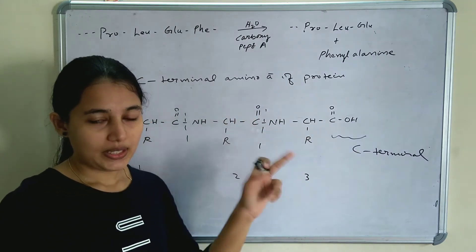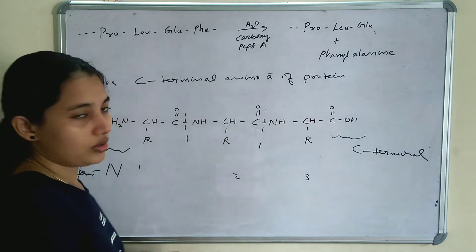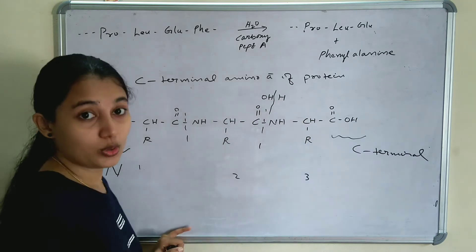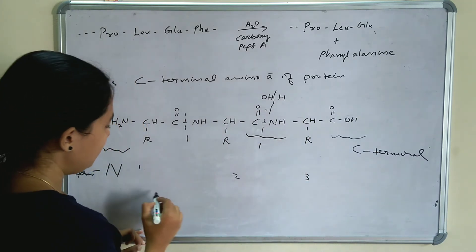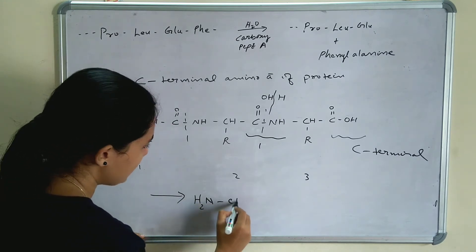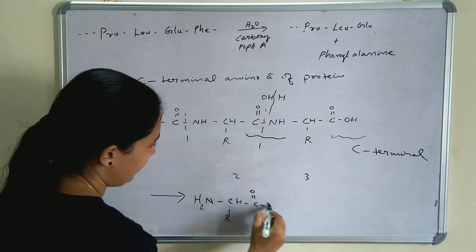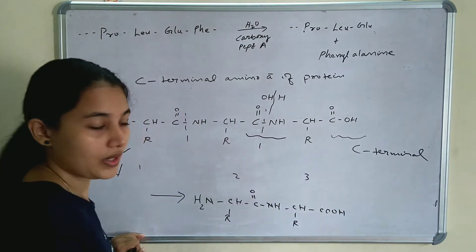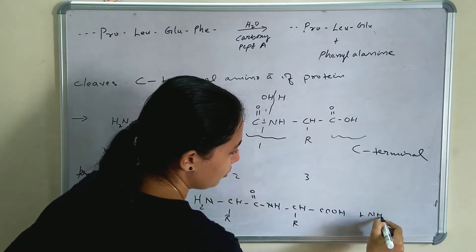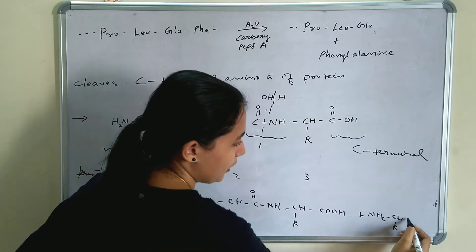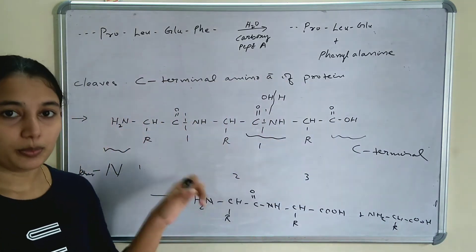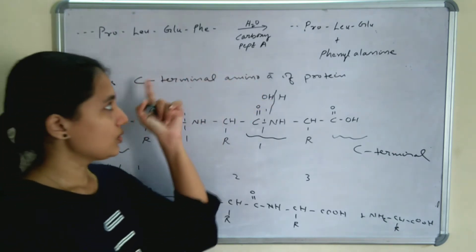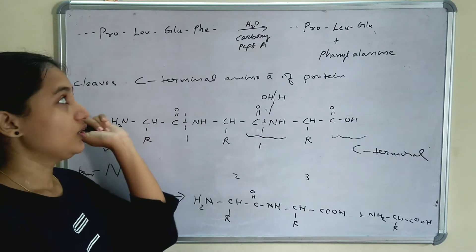Carboxypeptidase A hydrolyzes the C-terminal of the protein chain. Adding OH and H (hydrolysis) at the C-terminal position yields the individual amino acids. For example, a protein chain containing proline, leucine, glutamate, and phenylalanine — when carboxypeptidase A is added, hydrolysis takes place at the C-terminal and phenylalanine is separately released as the product.